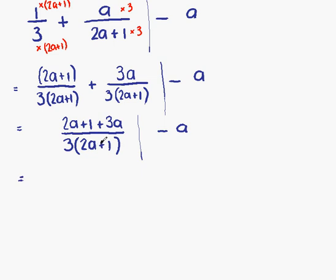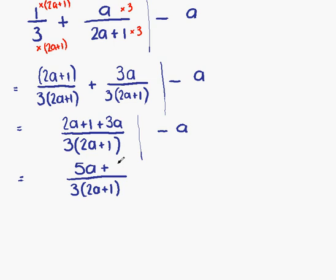What we have on our first fraction is some like terms on the numerator that can be collected together. Putting down our denominator, on the top line we have 2a plus 1 plus 3a. 2a plus 3a gives us 5a, and then plus 1. So our numerator simplifies to 5a plus 1.